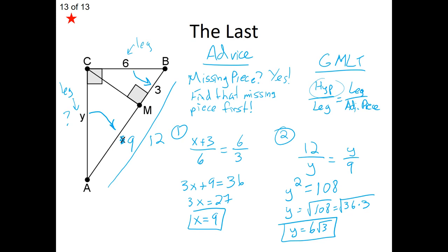You'll see some of these problems on your worksheet, and they can be tricky. Remember to first analyze your diagram: are you given the altitude, legs, or pieces of the hypotenuse? If you're missing any piece of the hypotenuse, find that first using either the GMAT or GMLT depending on what's given. With these two theorems, you'll be able to find the missing pieces. Please hop over to the 8.1 worksheet — if you have any questions, email me. Be good and do good.